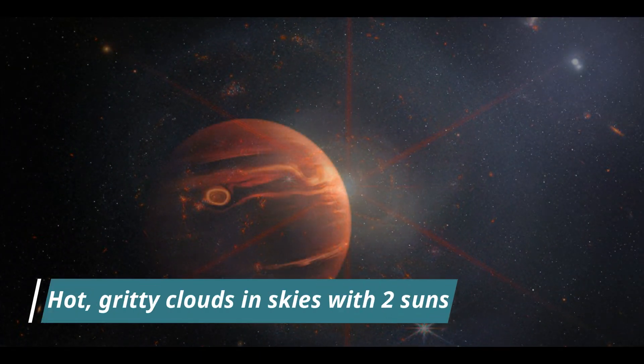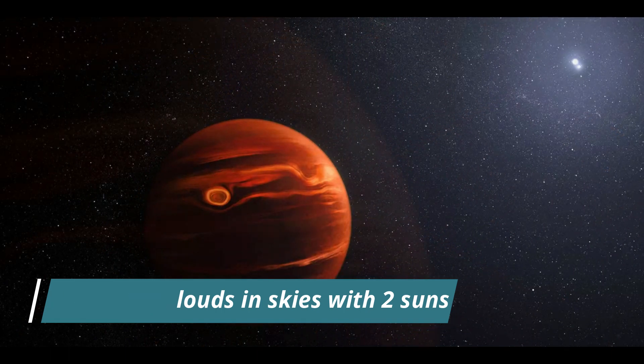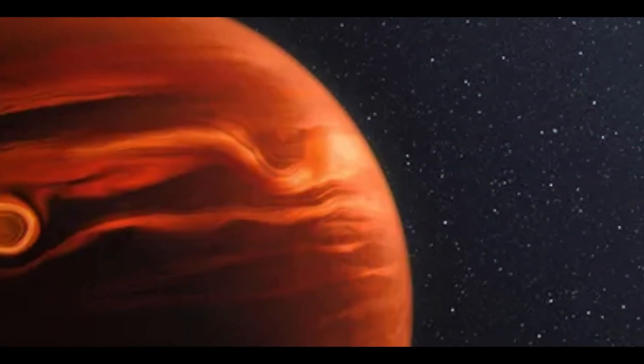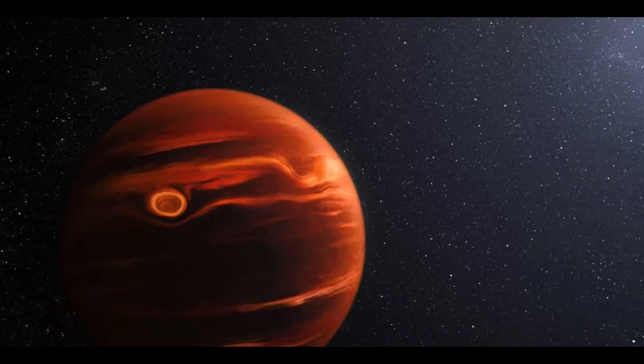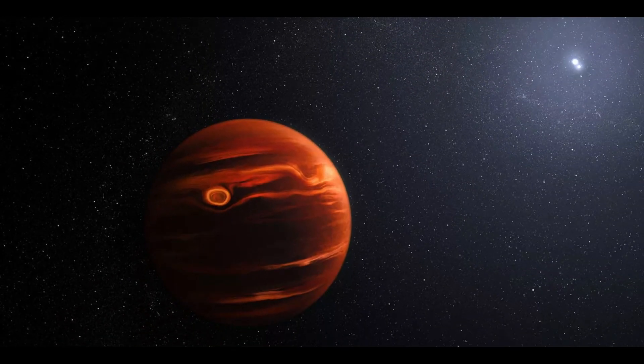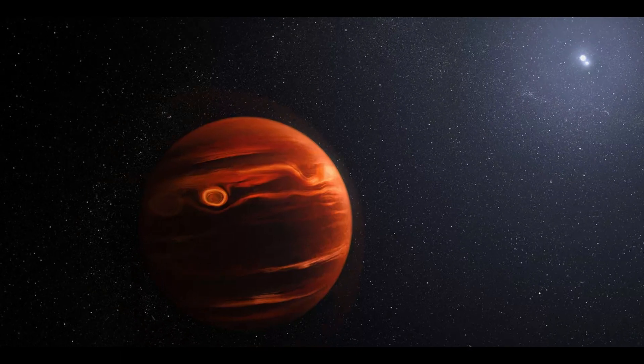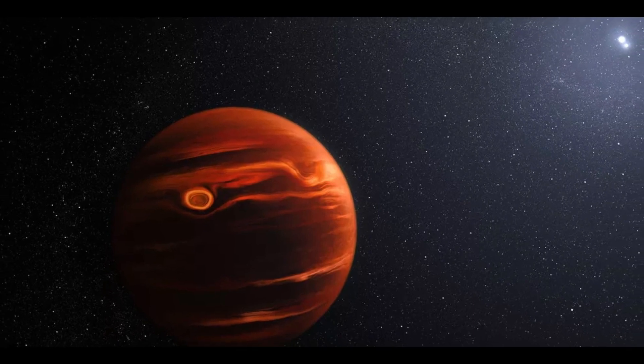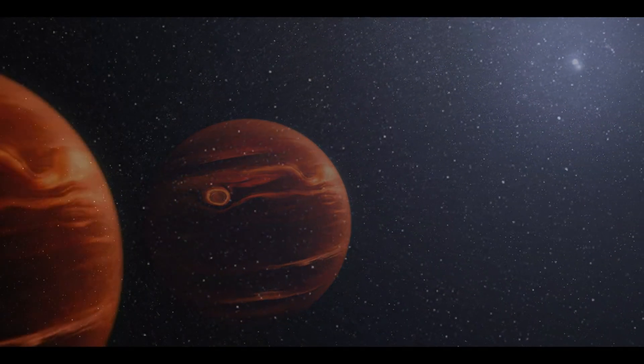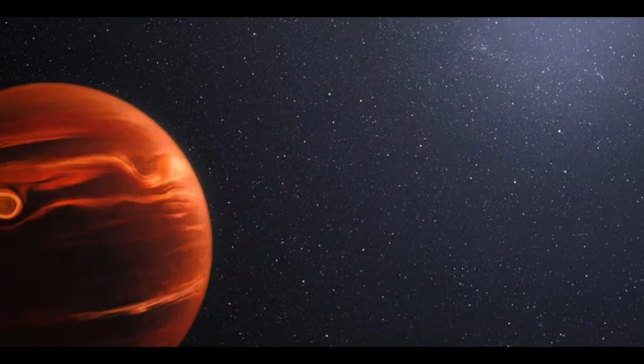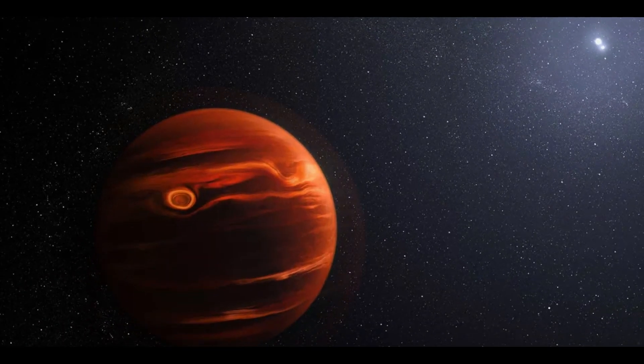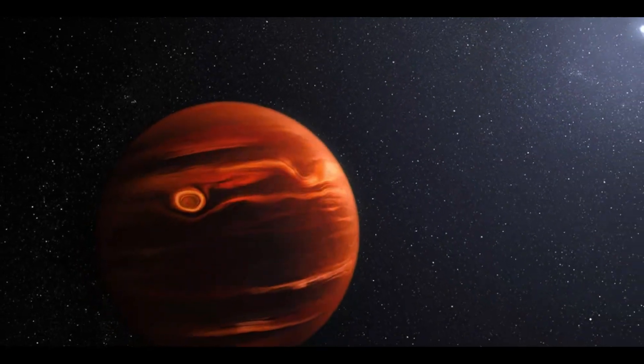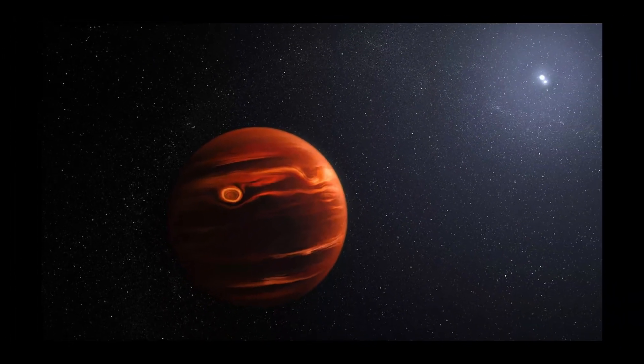Number 5, hot, gritty clouds in skies of huge exoplanet with two suns. NASA's James Webb Space Telescope has made another spectacular discovery. The pioneering observatory just peered directly into the atmosphere of VHS-1256b, a giant exoplanet with two suns and discovered a roiling world with turbulent clouds made of silicates, similar to sand on Earth, as announced in a recent article published in Astrophysical Journal Letters.